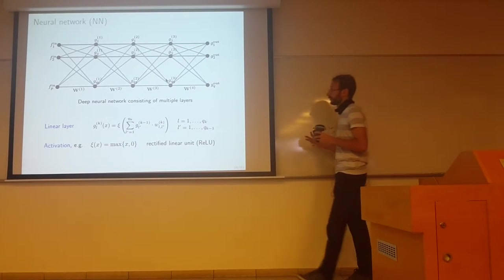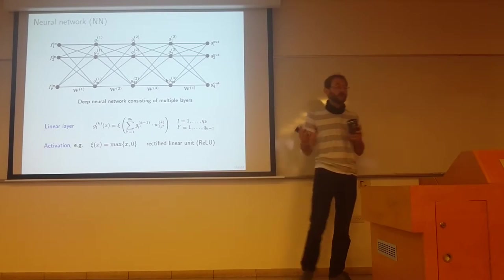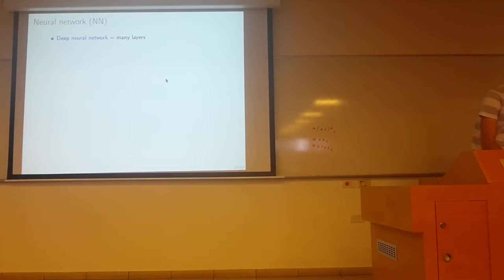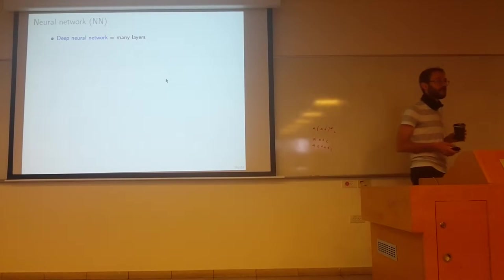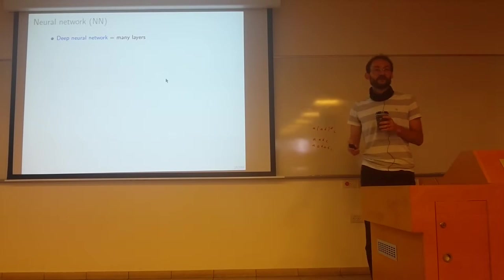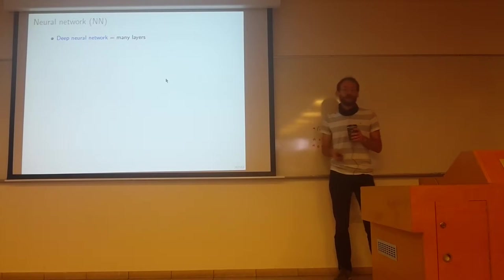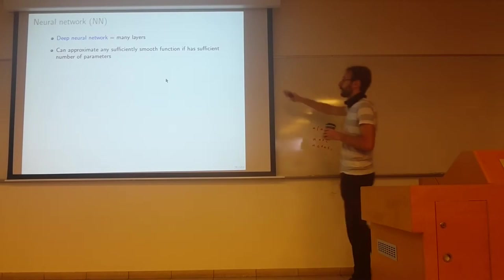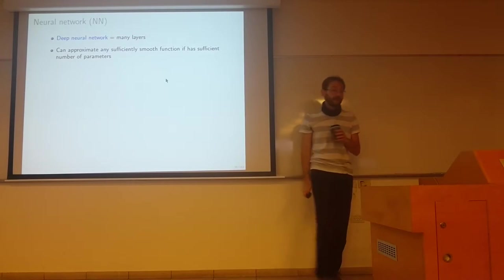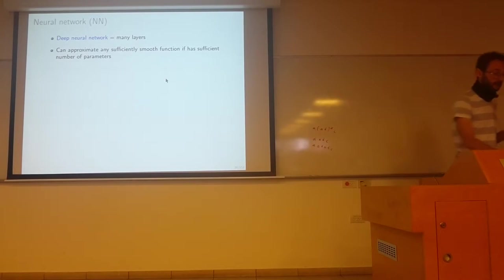In this way, you can approximate anything sufficiently complex if your network is sufficiently deep. The network is called deep if it has many layers. It's a vague notion what is deep - whether three layers are deep. People use several hundreds of layers nowadays, so these are probably very deep neural networks. Maybe a few years ago, a network with just five layers was considered deep. If you have sufficient depth and sufficient number of parameters, you can approximate, under some technical assumptions, any sufficiently good function.